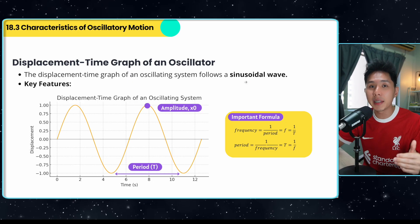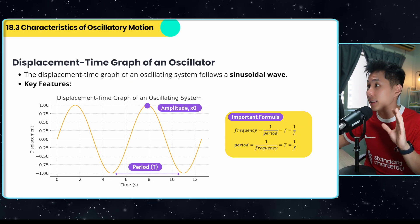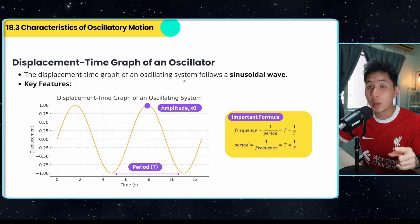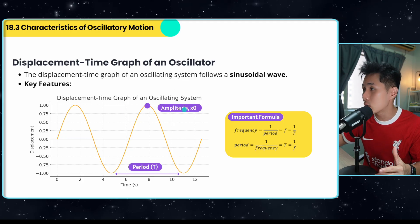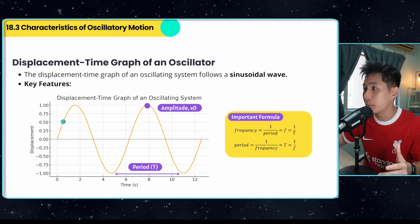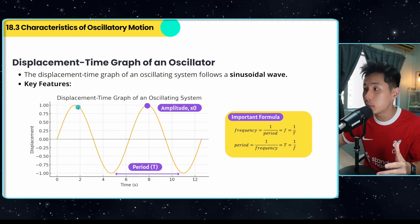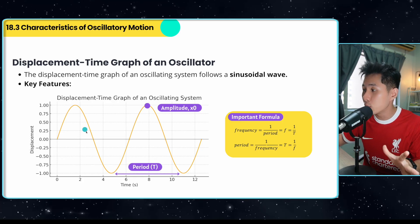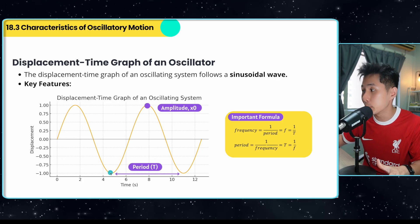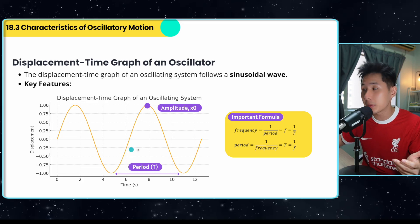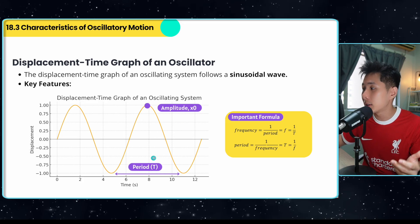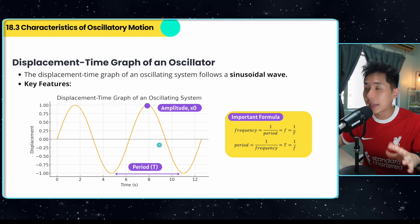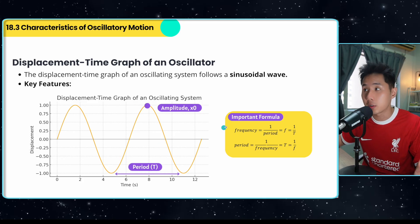One thing you need to know about oscillations is that the displacement-time graph of an oscillating system follows a wave. As it reaches the maximum displacement, it changes direction and moves to the opposite maximum displacement. Since we already covered the wave chapter, amplitude and period are terms you have learned, and now we can apply them to oscillations.